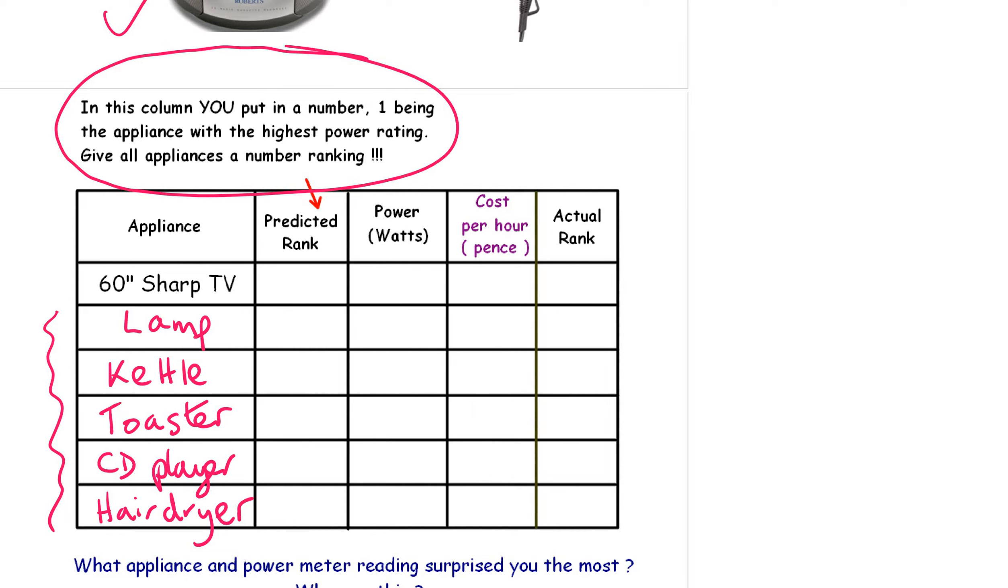Which appliance is the most powerful? If you think that the hair dryer is the most powerful, you write in number one here. If you think the TV is number two, the second most powerful, you write it in here. If you think the kettle is number three, write it in. The toaster number four, the CD player number five, and the lamp number six. Now I've just made those numbers up. You have got to put in your own values. Which do you think is number one, the most power hungry? Then which is the least powerful, which uses the least amount of electricity? That'll be number six.